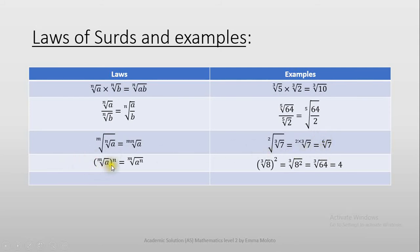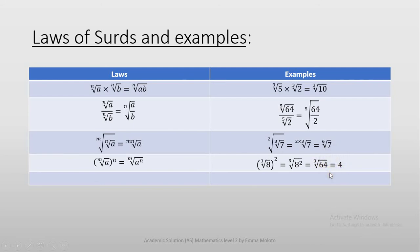The last law says the mth root of a all over n is equals to the mth root of a to the exponent n. The n affected what's inside the brackets, so we have the mth root of a to the exponent n. Checking the example: the cube root of 8 all to the exponent 2 is equals to the cube root of 8 to the exponent 2, which is the cube root of 64, giving us 4.